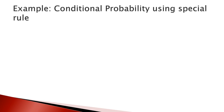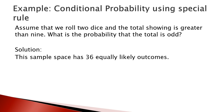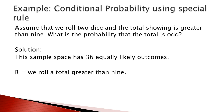Now we look at an example to calculate conditional probability using this special rule. Assume that we roll two dice and the total shown is greater than 9. The sample space has 36 equally likely outcomes. Let B be the event that we roll a total greater than 9.